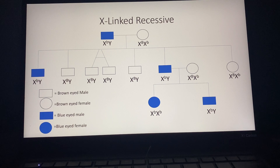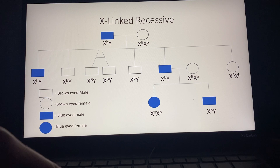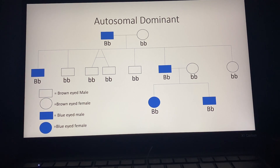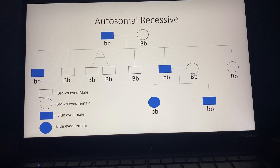X-linked recessive is seen here. Autosomal dominant is seen here. Autosomal recessive is seen here.